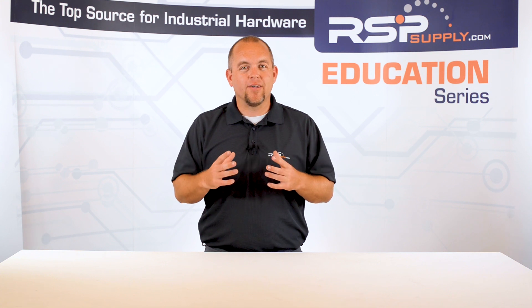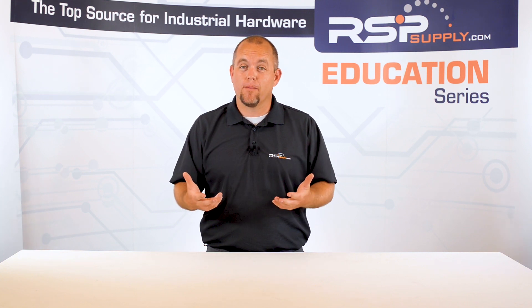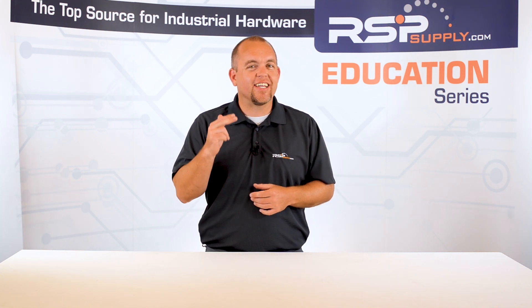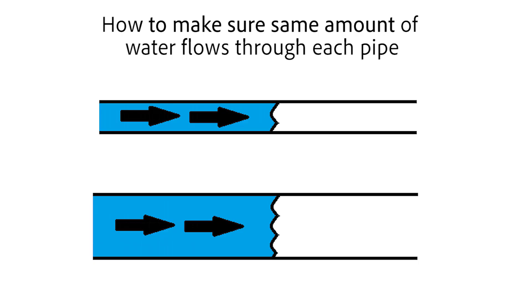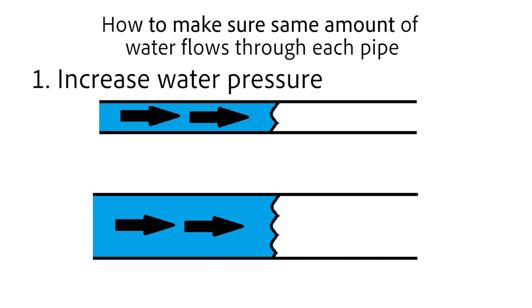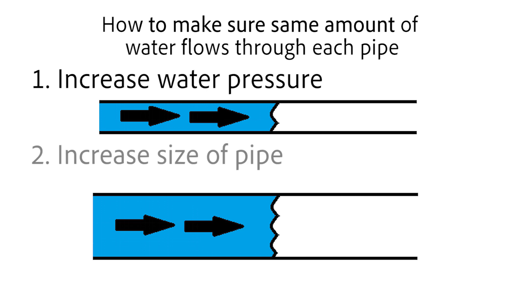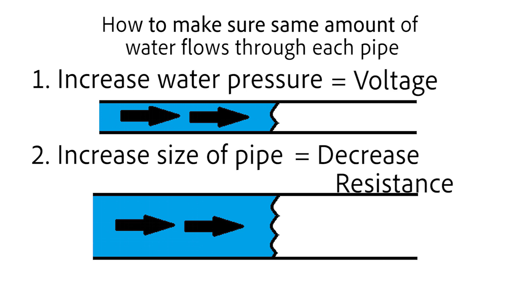So what happens when we need to have the same amount of current passing through each conductor? Looking at the water analogy, in order to make sure the same amount of water is flowing through each pipe — even though one pipe is a smaller diameter — one of two things will need to occur: either you will have to increase the water pressure being applied, or you would have to increase the size of your pipe. In electrical terms, this would mean you would need to either increase the voltage or decrease the resistance.